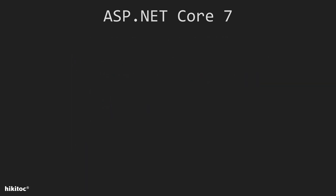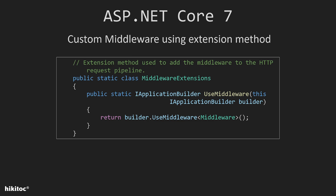The second way is to create a class and extension method. The code you see on your screen is provided automatically by Visual Studio when a middleware class is created. This extension method is used to simplify the process of adding a custom middleware to the ASP.NET Core 7 request pipeline. The useMiddleware method extends the IApplicationBuilder interface, which is responsible for configuring the middleware pipeline. By using this extension method, we don't need to explicitly specify the type of the middleware class each time we add it to the pipeline. Instead, you can simply call app.useMiddleware and the extension method will handle the registration of the middleware class for you.